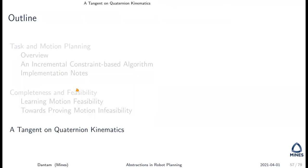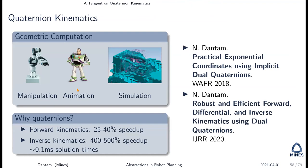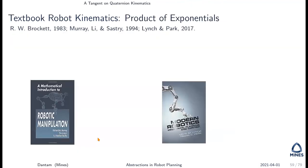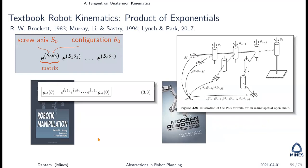Let me briefly tell you about quaternion kinematics. Kinematics shows up all over the place — in manipulation, animation, simulation. Why care about quaternions? Computationally, it's a little faster for forward kinematics and a lot faster for inverse kinematics. Analytically, robot kinematics textbooks describe kinematics using the product of exponentials — screw axes and angles — which gives an analytically nice way to deal with robot manipulator kinematics.